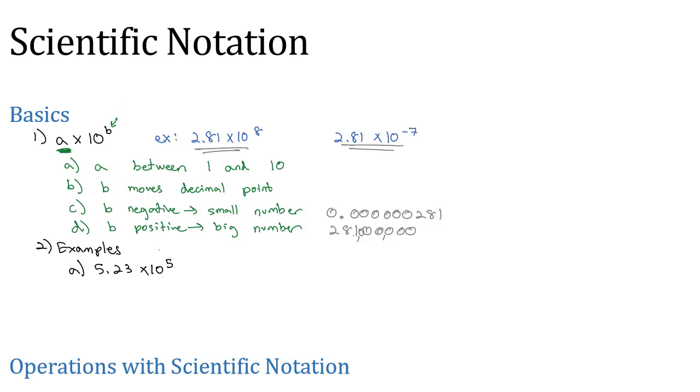Because that exponent is positive, I'm going to move the decimal to make it bigger, which means I move it to the right five times. One, two puts it after the three, and then 3, 4, 5 gives me three additional zeros. So I've got 5, 2, 3 with three additional zeros - 523,000.